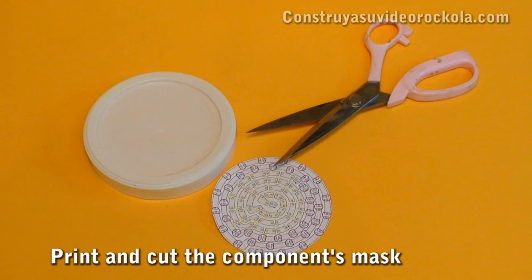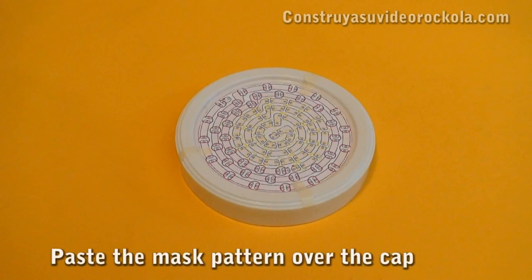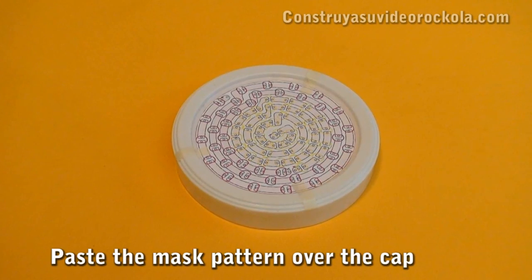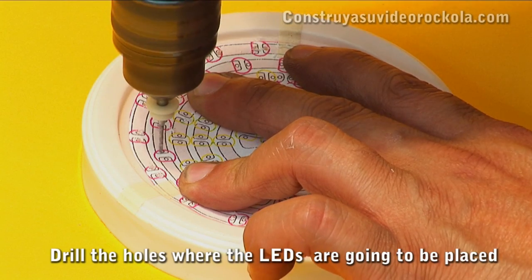Print the mask of components found in the PDF file and then cut it with scissors. Paste the mask pattern on the cap and mark components with the help of a drill. Drill all the holes where the LEDs will go.